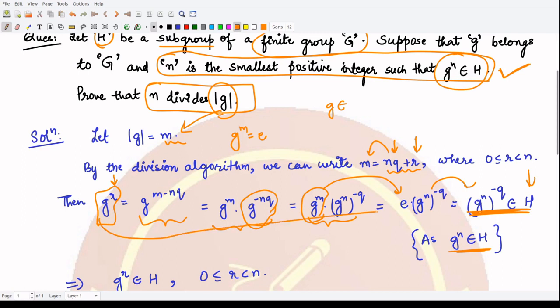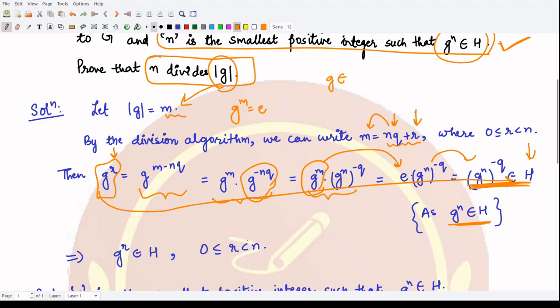So what does it mean? It means that this g raised to power r is present in H, where r is the number which is less than n, greater than or equal to 0, such that g raised to power r is contained in H.